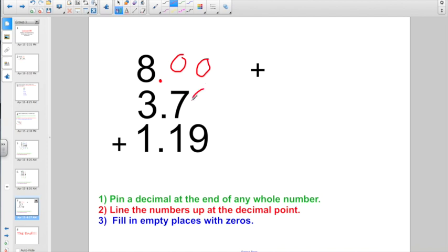8 doesn't have a decimal point, so I better draw one in and fill in any empty places with 0's. So now I have 3, 3-digit decimal numbers ready to be added, nice, neat, and straight at the decimal point. Bring the decimal point straight down into your answer.